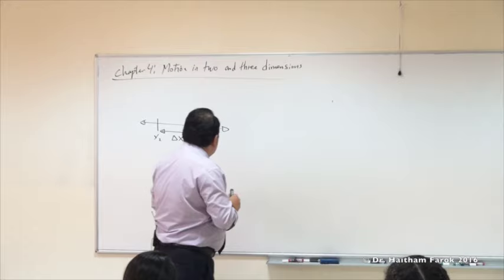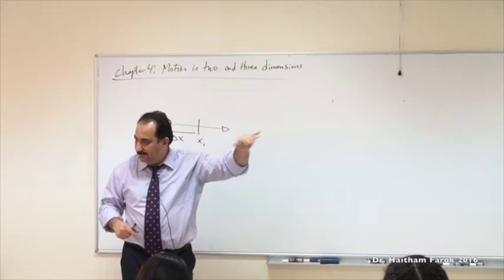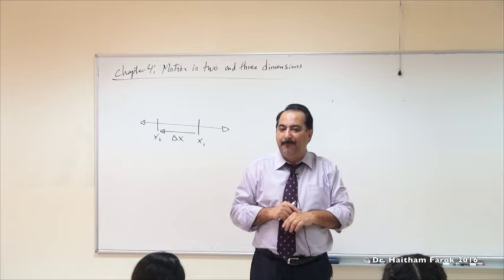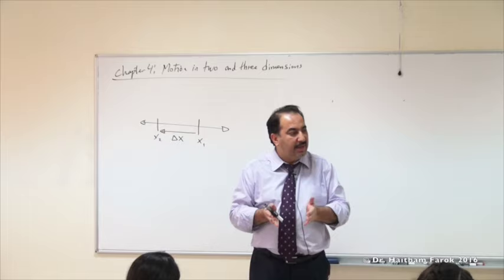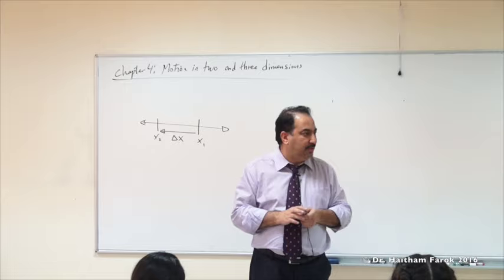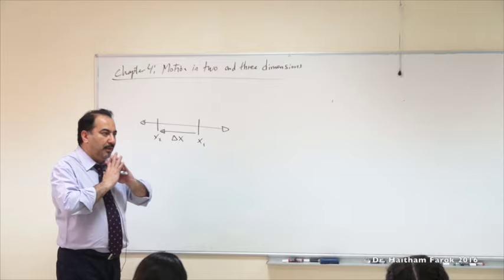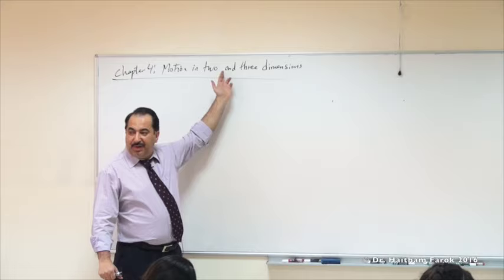We start with position in three dimensions. Once I talk about position, I have to define displacement in space. After that, if you know displacement and time, average velocity, then instantaneous velocity, average acceleration, and instantaneous acceleration - same sequence. Then we take the special case: motion with constant acceleration and the three equations of motion. There's nothing new except we have to think three dimensions. Because when I say three, I'm covering two as well.